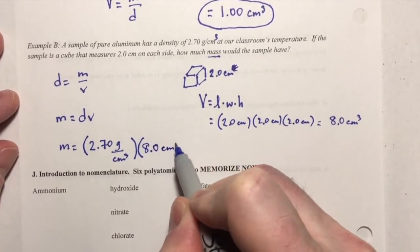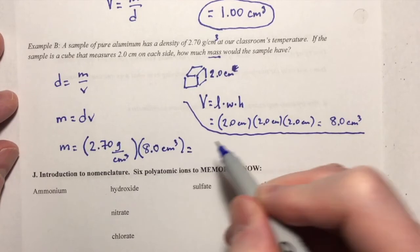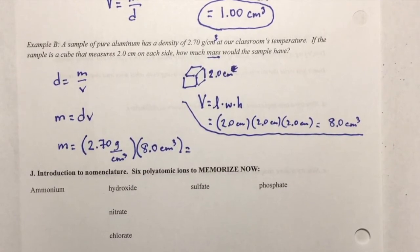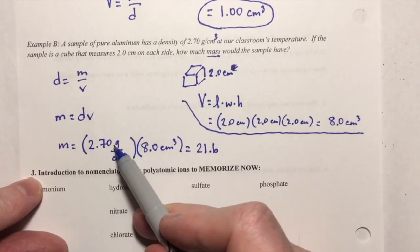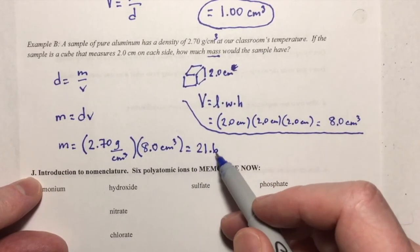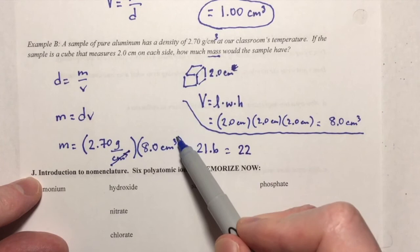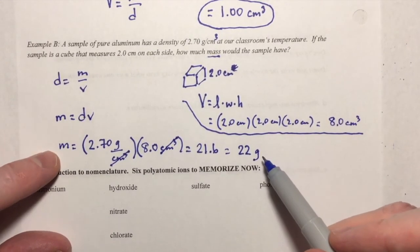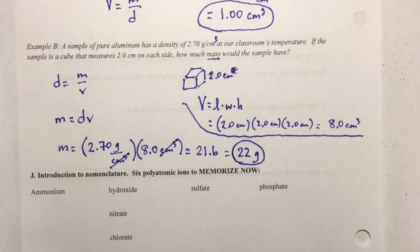I can now plug 8.0 cubic centimeters into my equation for volume. Taking a calculator: 2.70 grams per cubic centimeter times 8.0 gives 21.6. I need to round to the fewest sig figs — 3 sig figs versus 2 sig figs in multiplication, so I round to 22. Notice the cubic centimeters cancel, leaving units of grams. Does that make sense for mass? Yes — grams is the appropriate unit. So the answer is 22 grams.